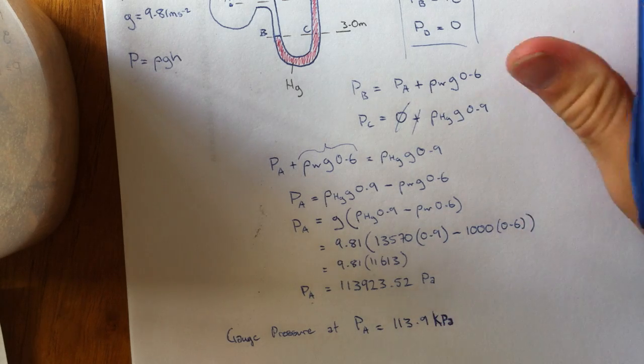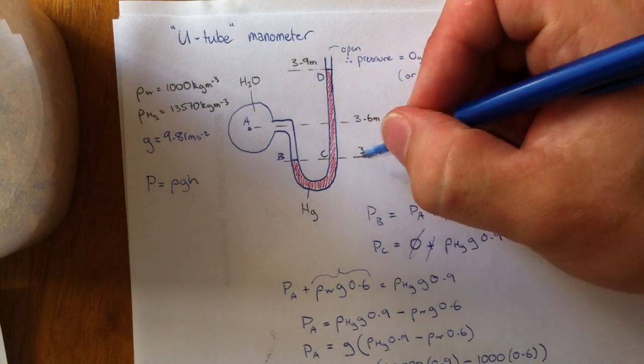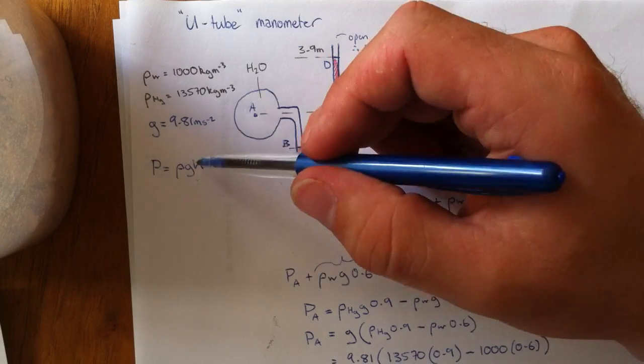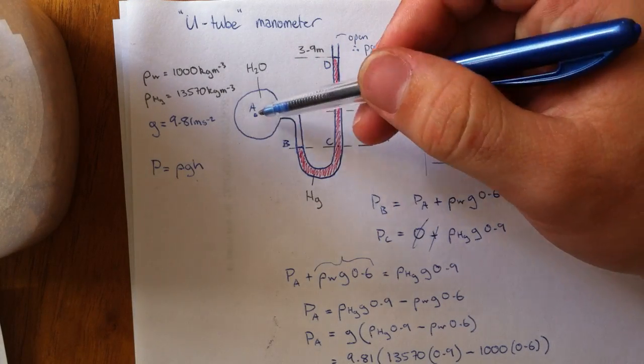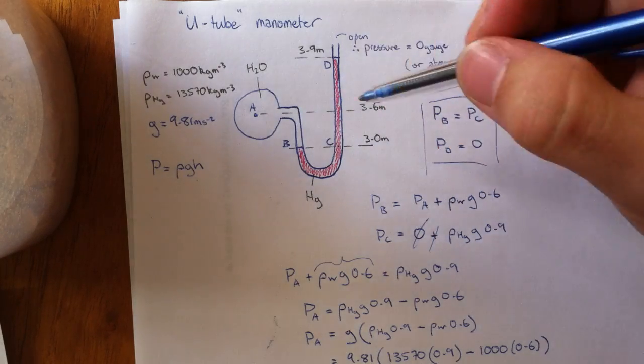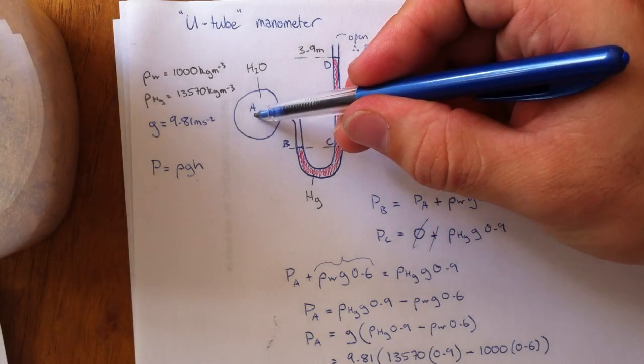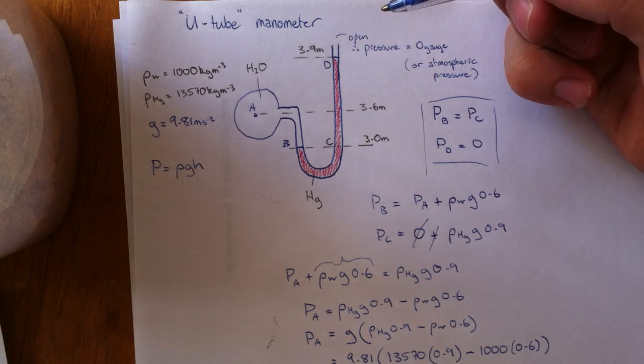So there we go. We've used some little rules, lever rule, this formula here, densities of the liquids and positive or negative pressure increase to establish the pressure at this point. That's a simple U-tube manometer problem.